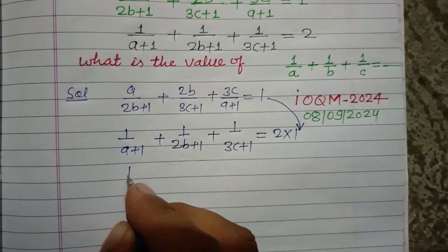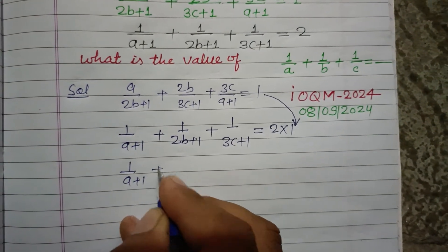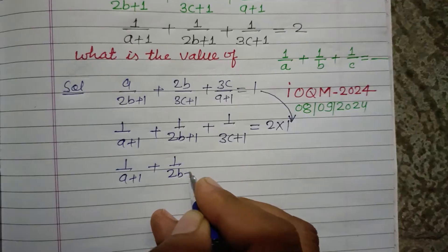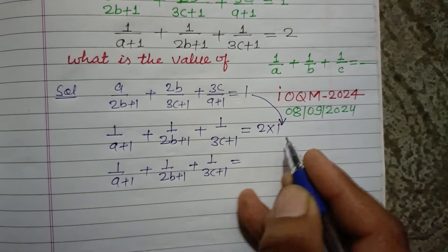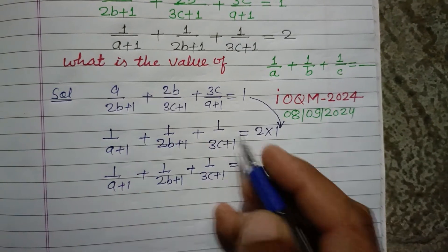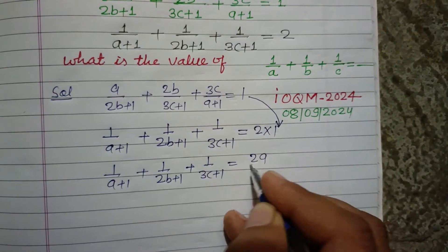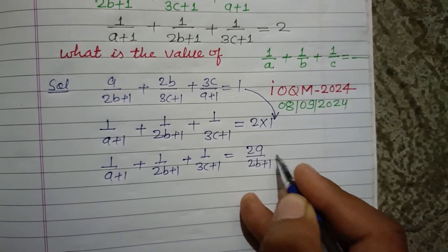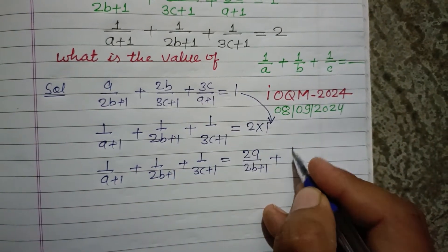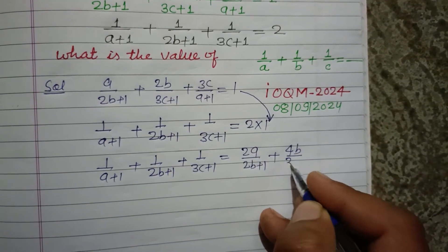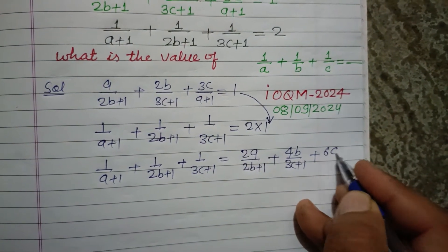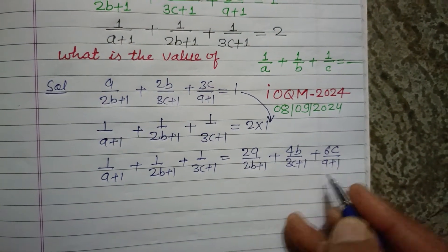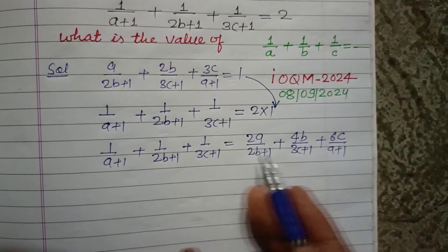So this is 1 upon a plus 1, 1 upon 2b plus 1, 1 upon 3c plus 1. When we put this value we get 2a over 2b plus 1, 4b over 3c plus 1, and 6c over a plus 1. We bring these all terms towards the right side.